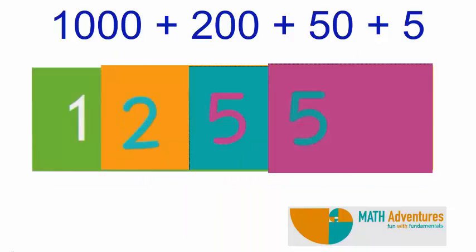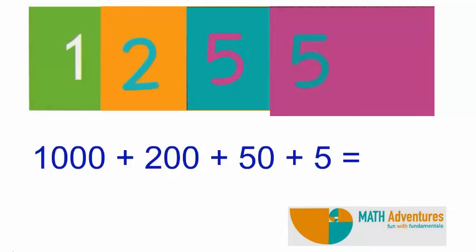Now place the orange card above the green card, the blue card above the orange card, and the pink card above the blue card such that their right edges meet. Now what number do you see? Is it not 1,255? So can we say 1,000 plus 200 plus 50 plus 5 is equal to 1,255?